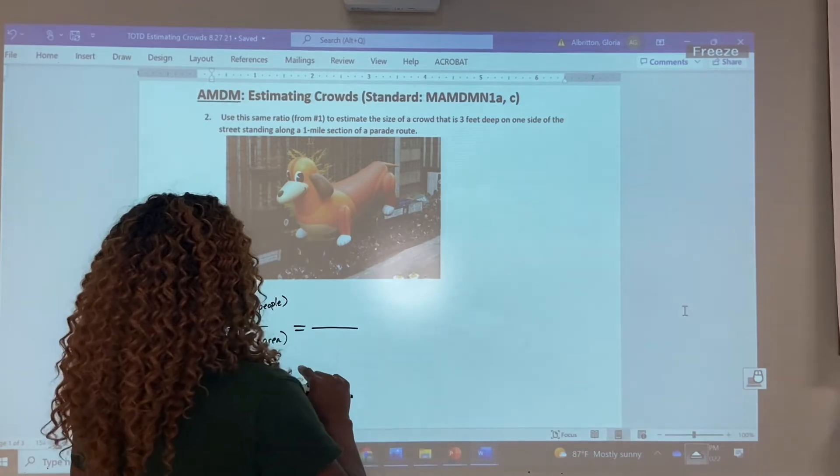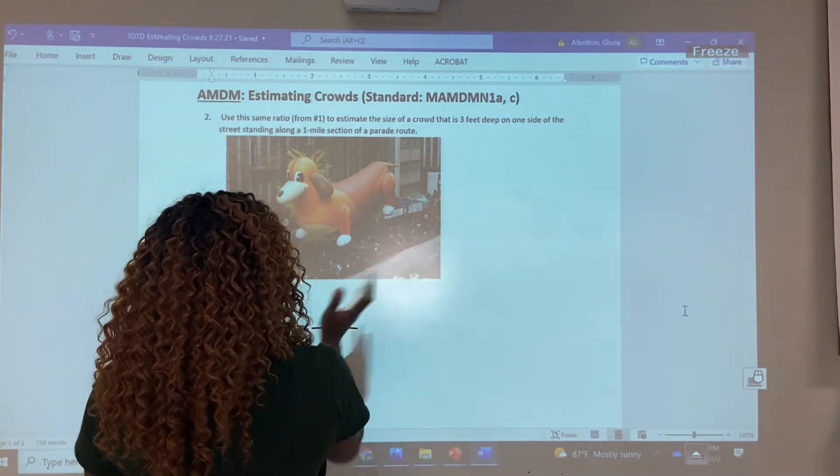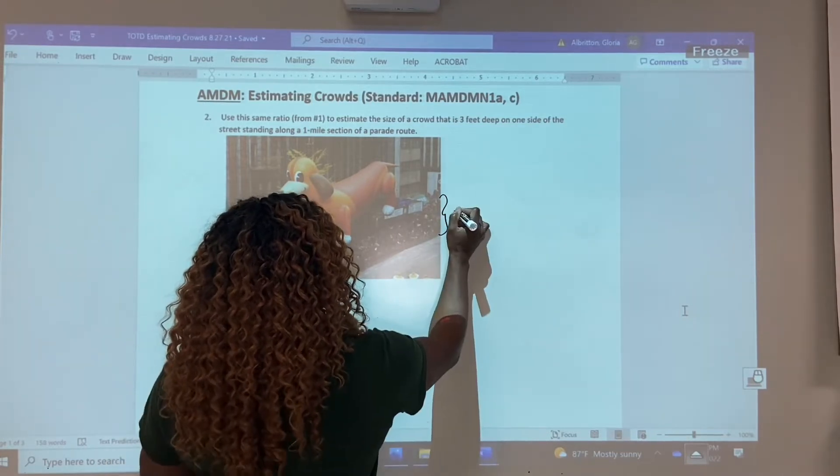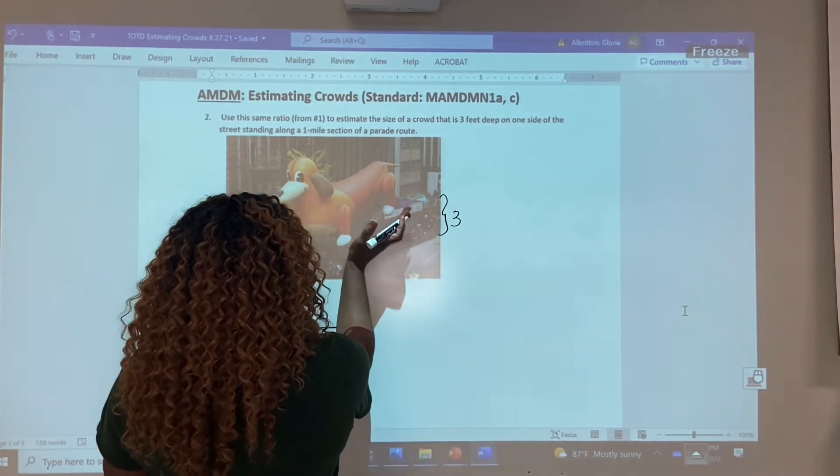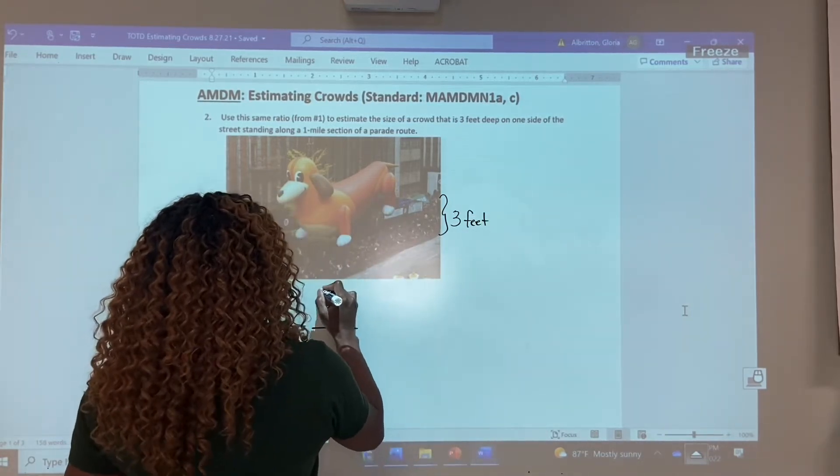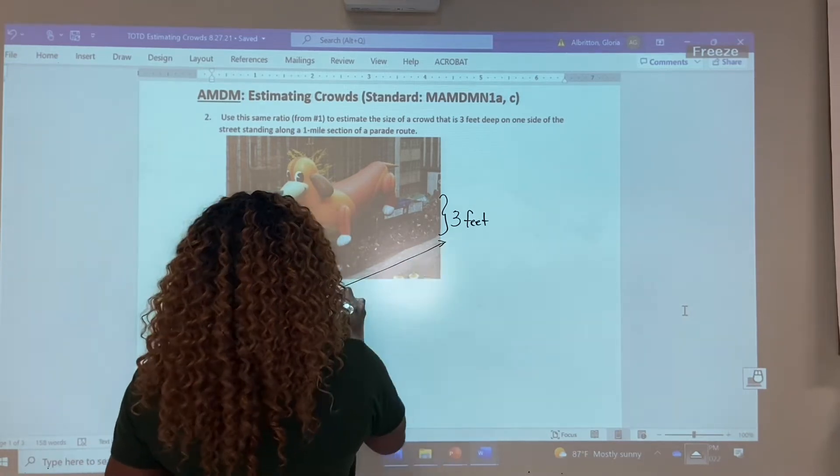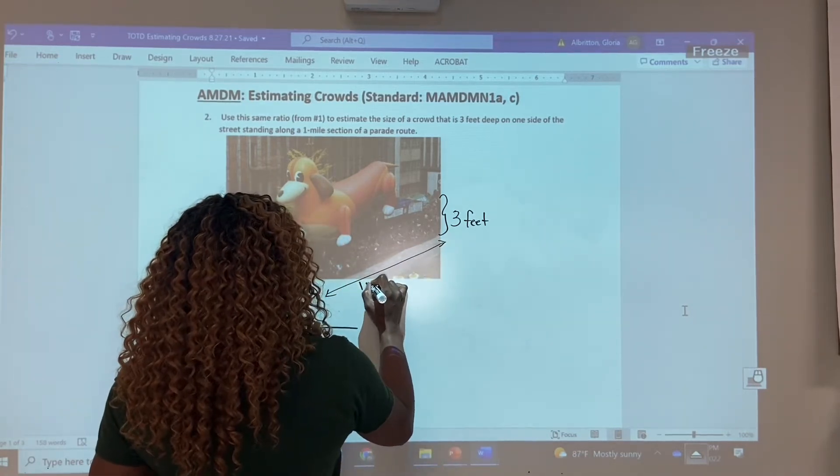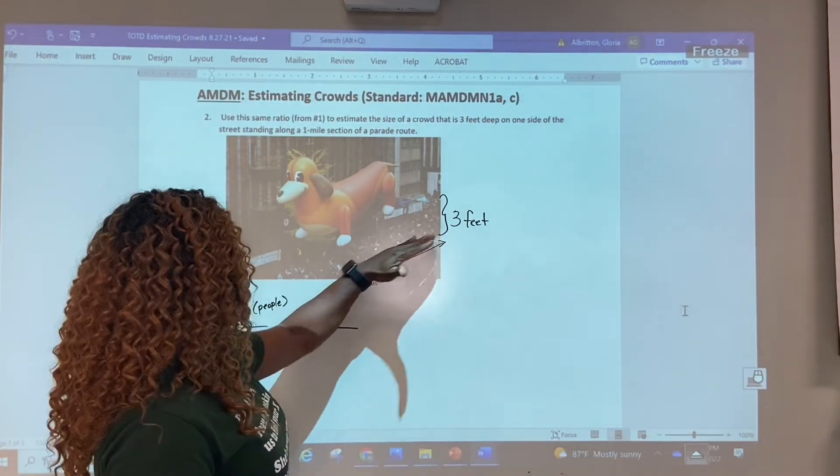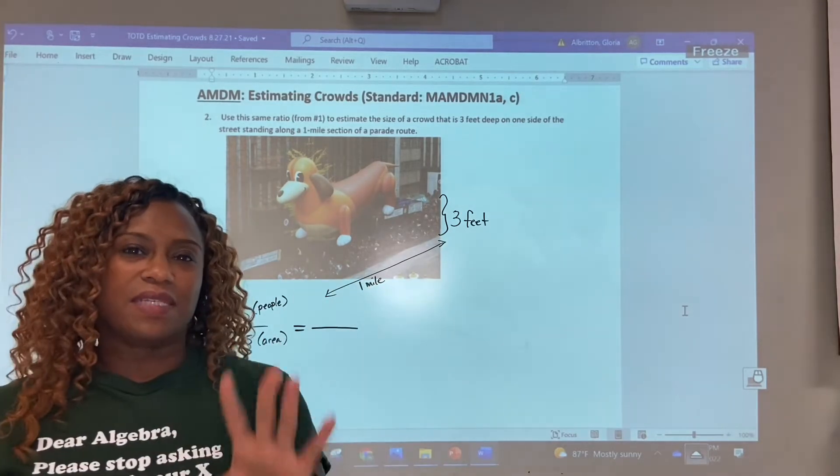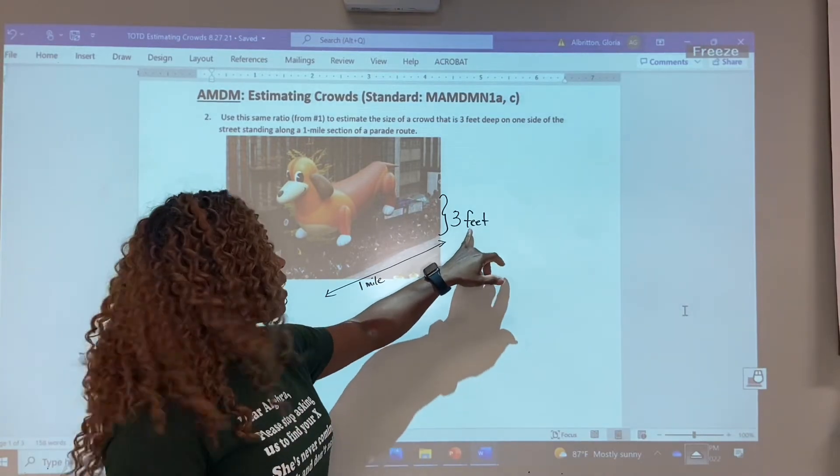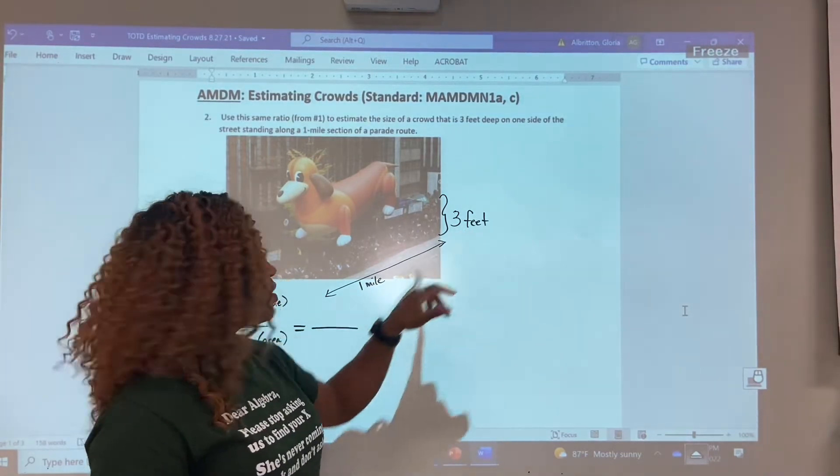So if these crowds of people are standing three feet deep, what that means to us is that this crowd standing back to back is three feet. And a one mile section means that we are looking at one mile of that parade route. So we're only looking at this much of the parade. Before we calculate area, because this is going to help us with the area, there's a problem here. We've got three feet, one mile.